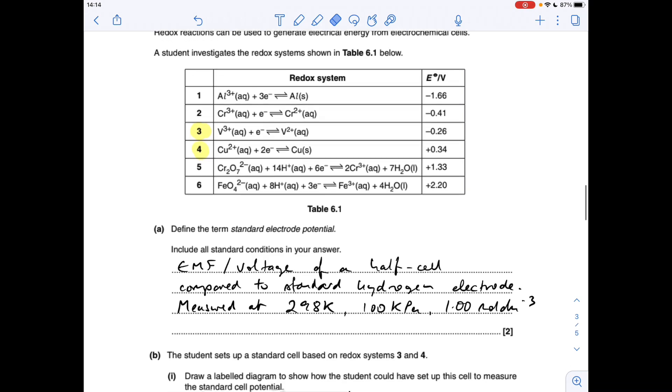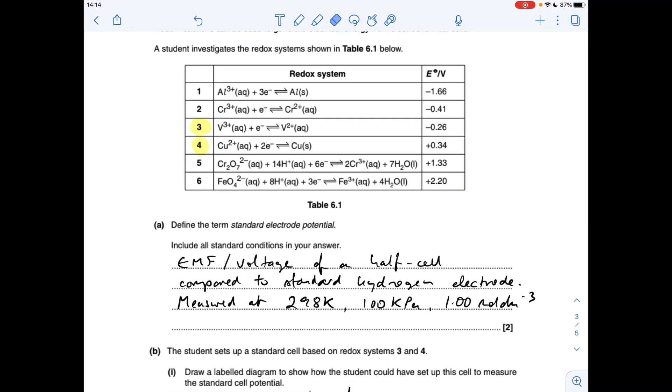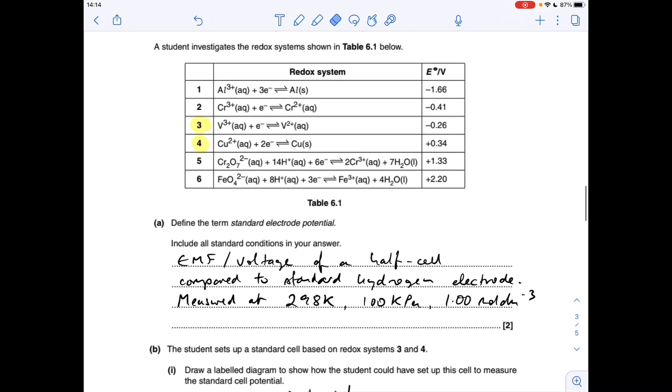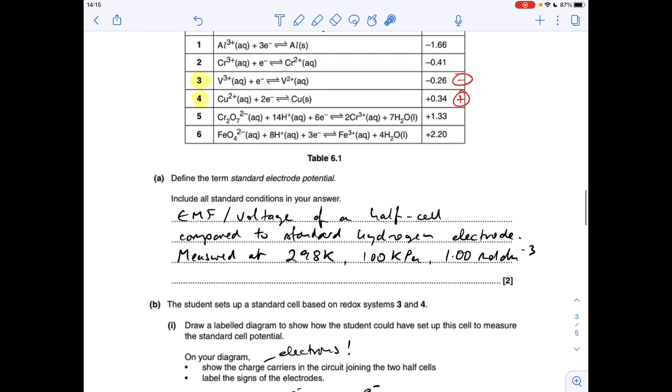Moving on to part B now. Student sets up a standard cell based on redox systems 3 and 4. We've got to draw the labeled diagram to show how the student could set up the cell to measure the cell potential. Include the charge carriers, that's the electrons in the circuit. The most positive one is the copper 2+ copper, so that's going to be our positive electrode. That must be the negative electrode. The electrons are going to flow to the copper electrode, copper 2+ is going to gain them. So the electrons are coming from the V2+, it's going that direction, giving up its electrons, copper 2+ is gaining them.